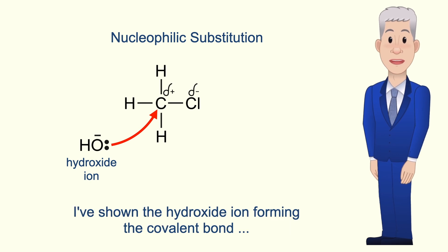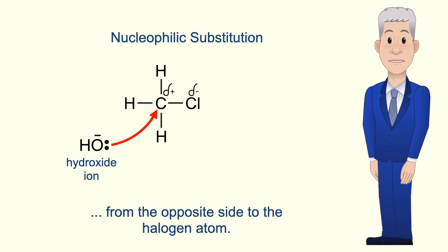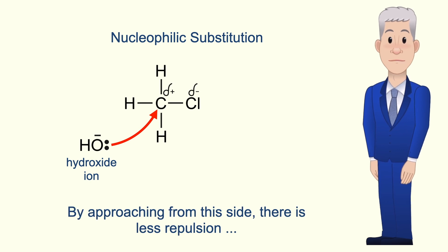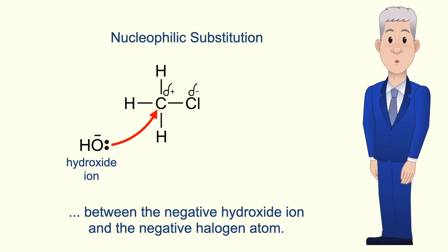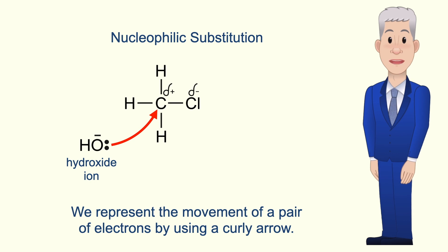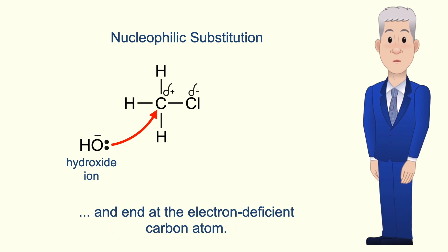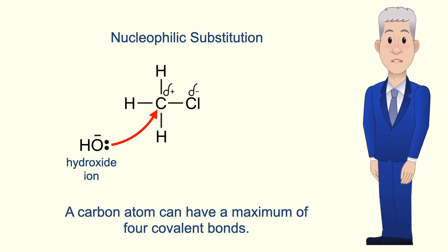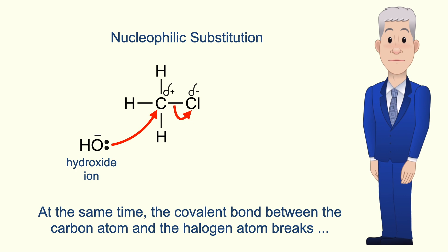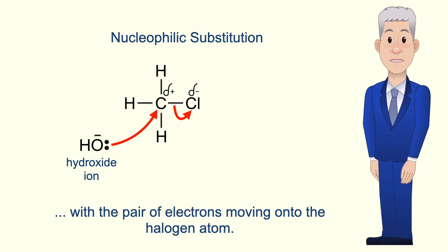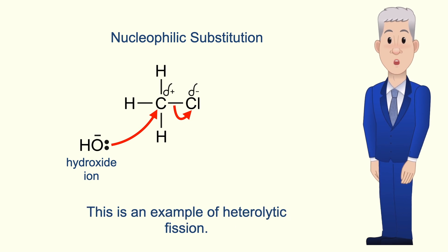I've shown the hydroxide ion forming the covalent bond from the opposite side to the halogen atom. By approaching from this side there's less repulsion between the negative hydroxide ion and the negative halogen atom. We represent the movement of a pair of electrons by using a curly arrow, and you need to draw this very carefully. The curly arrow must start at the lone pair of electrons and end at the electron-deficient carbon atom. Now a carbon atom can have a maximum of four covalent bonds, so at the same time the covalent bond between the carbon atom and the halogen atom breaks, with the pair of electrons moving onto the halogen atom. This is an example of heterolytic fission.